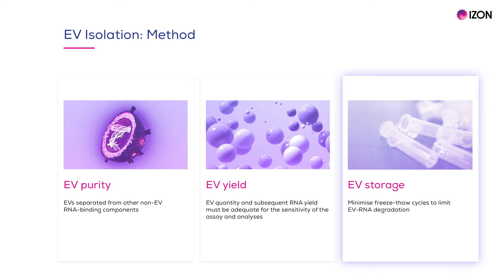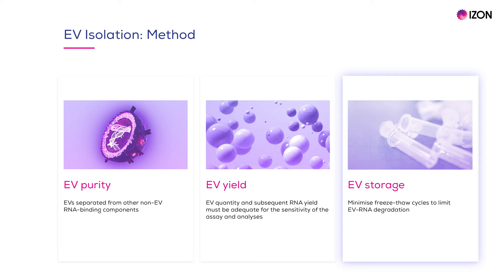EV RNA is sensitive to temperature-driven degradation. Therefore, when storing unprocessed or purified EV samples, it's important to do everything you can to help maintain native EV RNA composition. Storage protocol studies have demonstrated the protection of RNA cargo when EV samples are stored at -80 degrees Celsius and when freeze-thaw cycles are minimized.